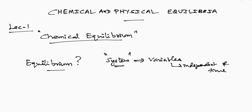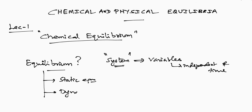In equilibrium, we classify equilibrium into two. Number one, static equilibrium. Number two, dynamic equilibrium.